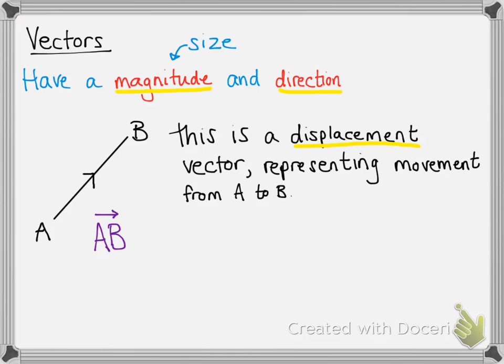Now this vector we can represent as AB with this arrow over the top of it. It could also be given a bold letter if it's typed, or if it's handwritten, it might be a little letter with a line underneath.